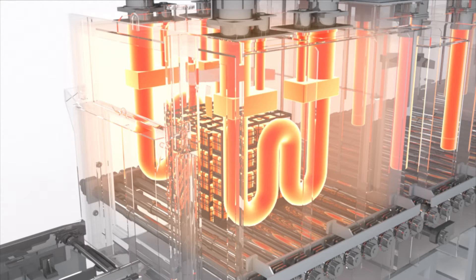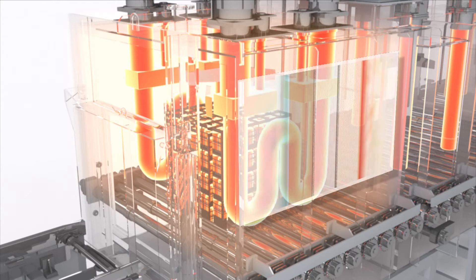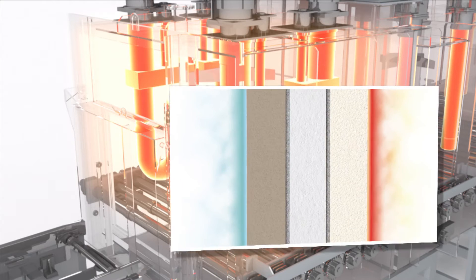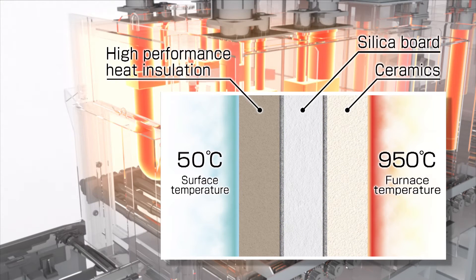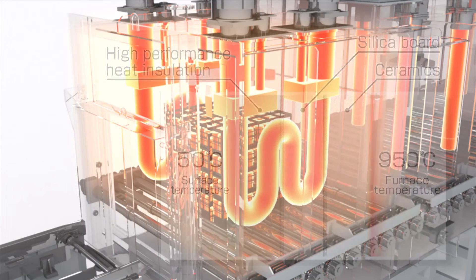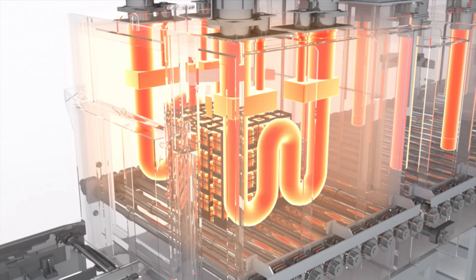Further, the wall of the furnace uses two different types of insulation materials: a high-functionality insulation material as the outer layer and high-insulation ceramic fibre as the inner layer. This way, the wall reduces heat energy loss in the furnace, improves combustion efficiency, and significantly reduces energy costs.